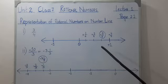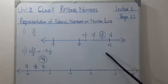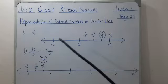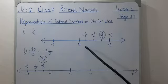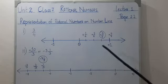So, we draw the number line like this. The number 3 by 4 is somewhere between 0 and 1.